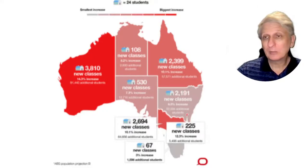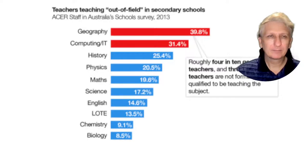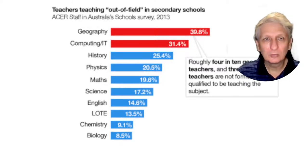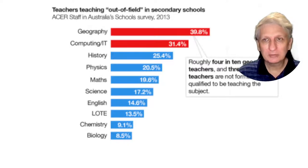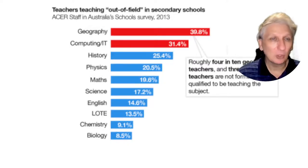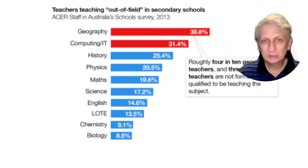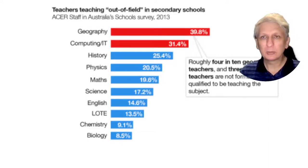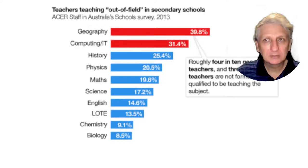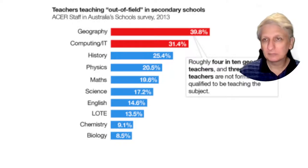This can happen when we look at global data that doesn't flow through to every nation equally. Similarly, the teacher shortage isn't equally distributed across subjects — there's a big shortage of geography and IT computing teachers, but not so much of biology and chemistry teachers. Generally there's not a shortage in primary school teachers, but there is in secondary school teachers, and that can change in different areas and demographics.